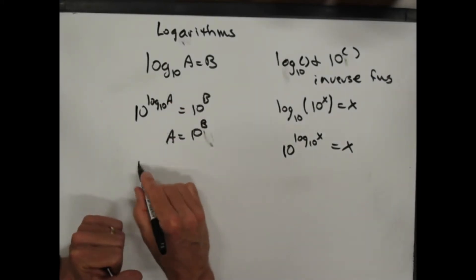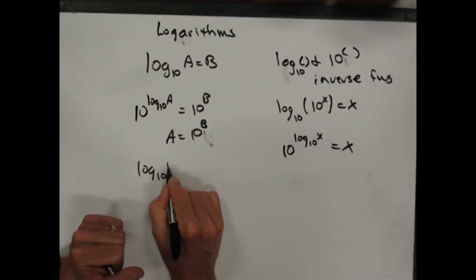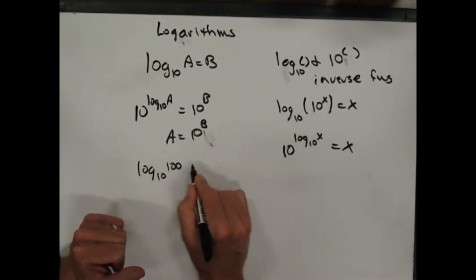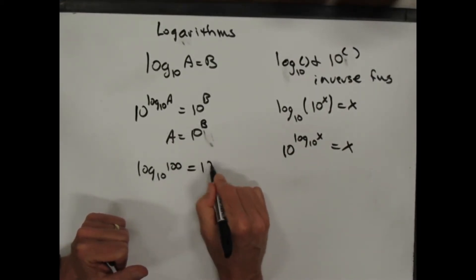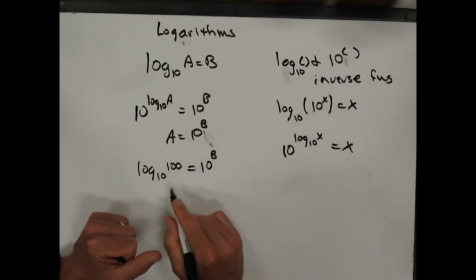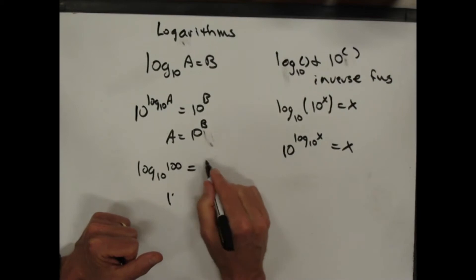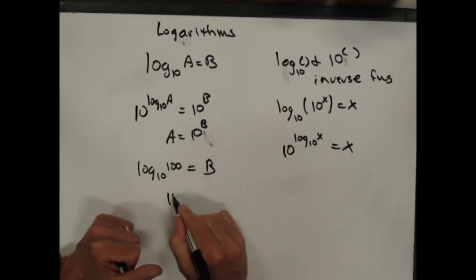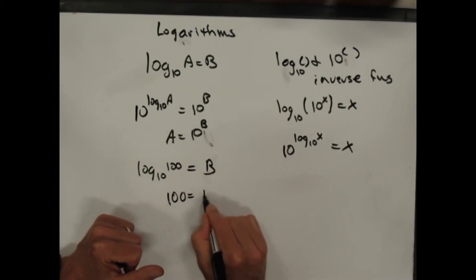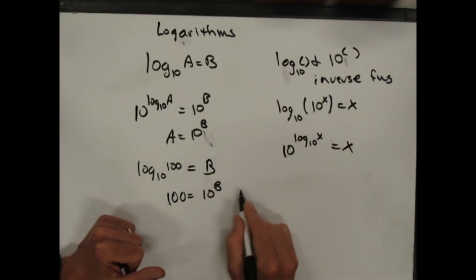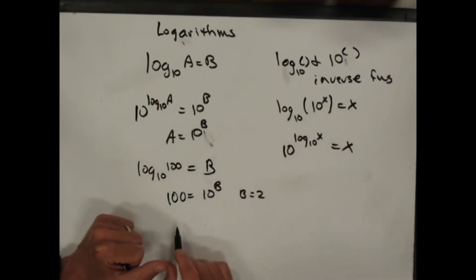And so for example, log base 10 of 100 equals b. That means 100 is equal to 10 to the b, and that means b equals 2, because 10 squared is 100.